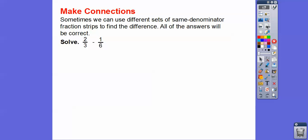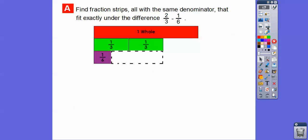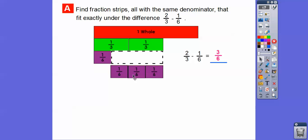Sometimes we can use different sets of the same denominator fraction strips to find the difference — all answers are going to be correct. Now we're going to solve two-thirds minus one-sixth. Here's two one-third strips, and we're going to take off this one-sixth strip. Since one-third is a multiple of one-sixth, we can fill it up with one-sixth strips. Two-thirds minus one-sixth equals three-sixths.